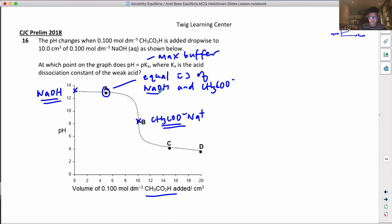Let me just tell you exactly - the max buffer is actually at D. Why is it at D? This is how you look at it.